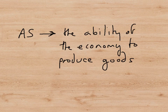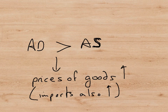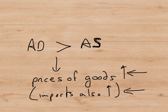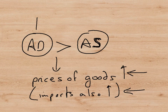Aggregate supply is the ability of the economy to produce goods. When aggregate demand is greater than aggregate supply, there is effectively a shortage of goods in the economy, because sectors are trying to consume faster than the economy can produce. This leads to prices going up — demand pull inflation. It also leads to more imports, as demanders turn to foreign goods. The main effect is that AD being greater than AS pulls up prices.